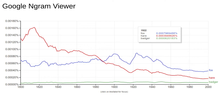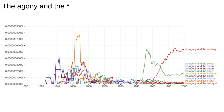This plot shows the number of occurrences of three animals over time. Hares were more popular than foxes until 1900, while badgers were never popular. Looking at text over time can show us how interest, trends, and even the use of language has changed over time.